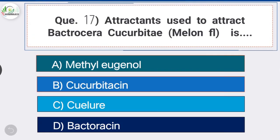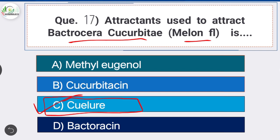Question 17: The attractant used to attract Bactrocera cucurbitae is Option C, the correct answer: cuelure. Cuelure is a standard lure used to attract the melon fly, Bactrocera cucurbitae. Methyl eugenol is used as an attractant for fruit flies.